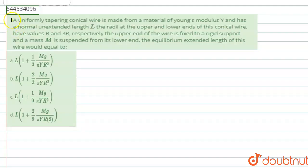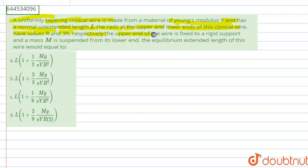The question is: a uniformly tapered conical wire is made up from a material whose Young's modulus is given as Y. It has a normal unextended length L, and the radii at the upper and lower ends of the conical wire are R and 3R respectively. The upper end of the wire is fixed to a rigid support and a mass M is suspended from the lower end. We have to find the equilibrium extended length of this wire.